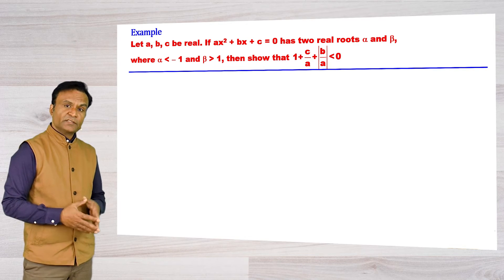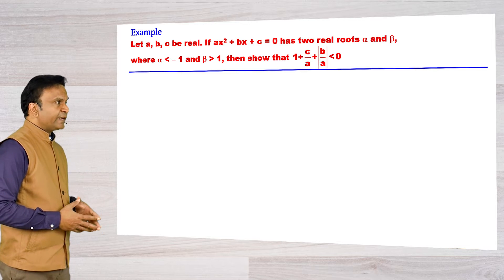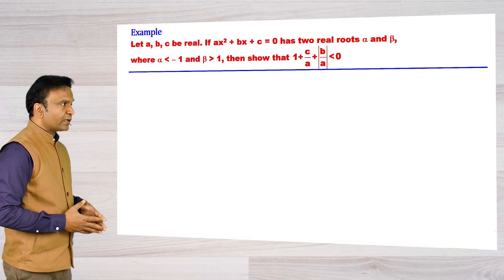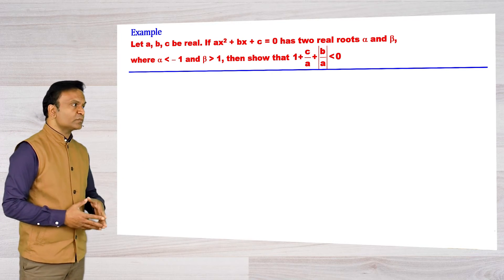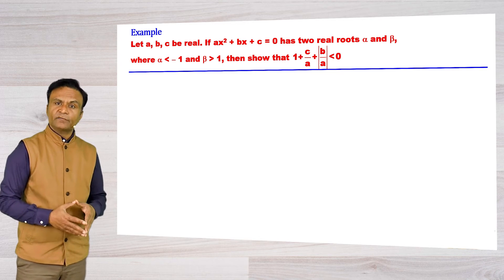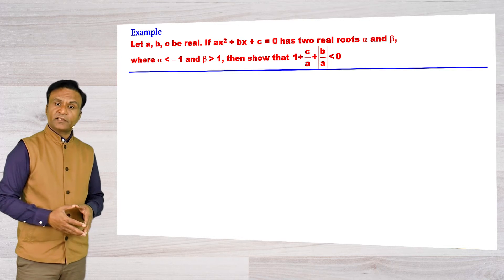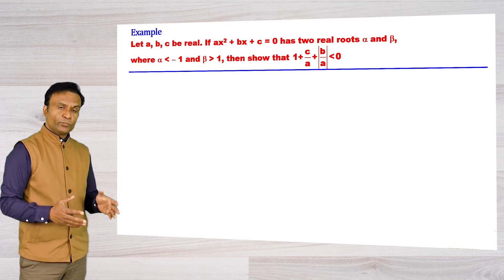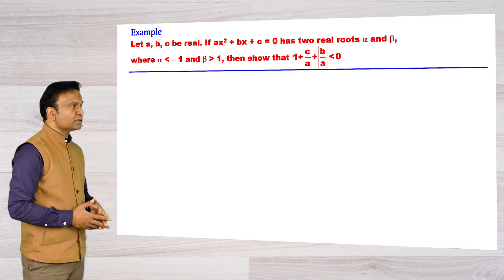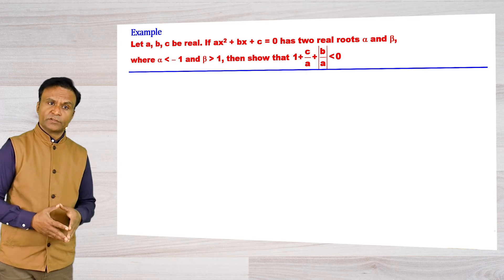Let us try one question asked in JEE exam. The question is: if a, b, c be real and if ax² + bx + c = 0 has two real roots α and β where α is less than -1 and β is greater than 1, then prove that 1 + c/a + |b/a| is less than 0.